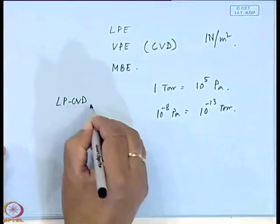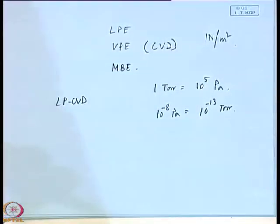Comparing MBE with CVD or VPE: in CVD or VPE, ultra-high vacuum is not required. In LP-CVD, only a low pressure of around 1 to 2 Torr is needed, not 10⁻¹³ Torr. Because of the ultra-high vacuum condition in MBE, the growth rate is very slow — to grow 1 micron of epitaxial layer, you may have to wait several hours.